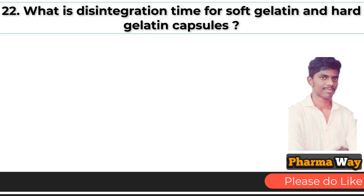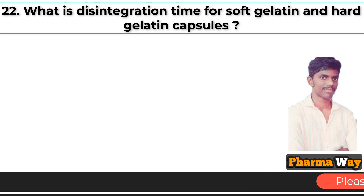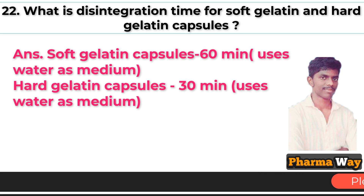What is the disintegration time for soft gelatin and hard gelatin capsules? Answer: Soft gelatin capsules' disintegration time is 60 minutes using water as a medium. Hard gelatin capsules' disintegration time is 30 minutes using water as a medium.